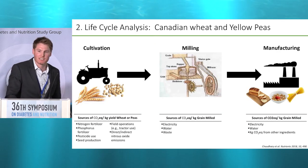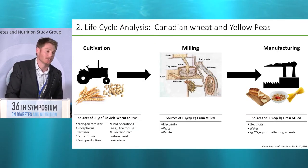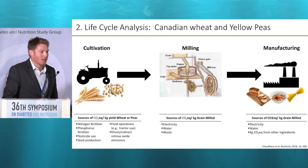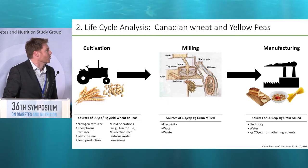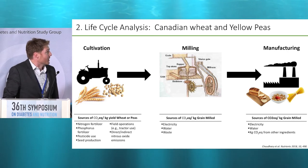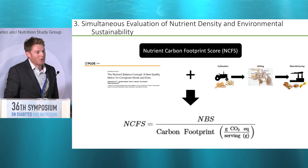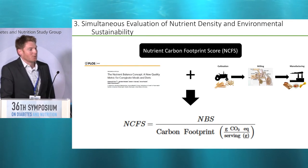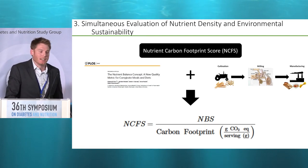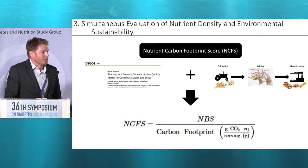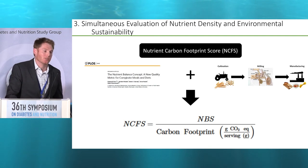Next we conducted a life cycle analysis for greenhouse gas emissions during each stage of production of yellow pea and wheat from production in the Great Northern Plains of Canada, looking at cultivation, milling, and manufacturing. Finally, we wanted to combine both nutrient density and greenhouse gas emissions of the food. We derived the Nutrient Carbon Footprint Score (NCFS), which is essentially the ratio of nutrient density per unit sustainability.